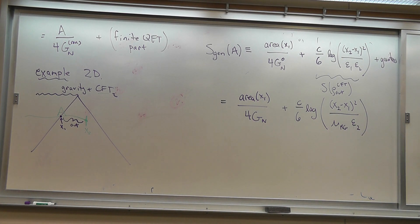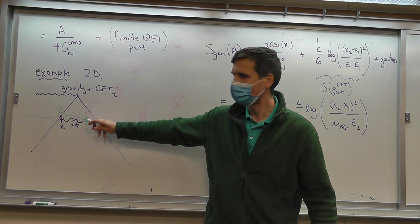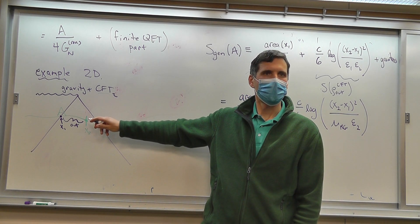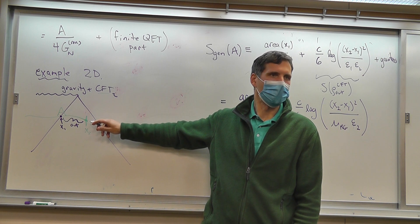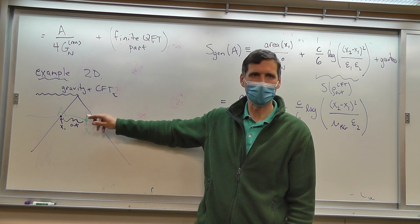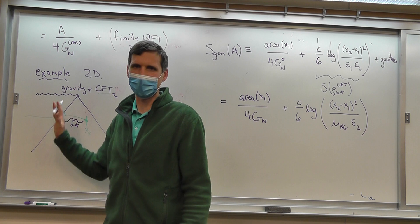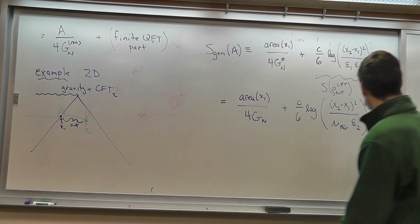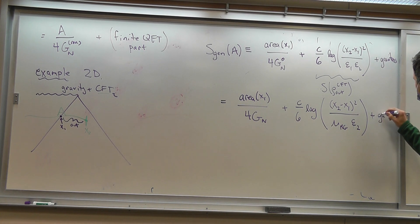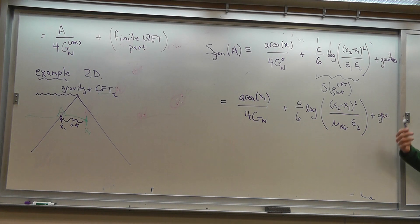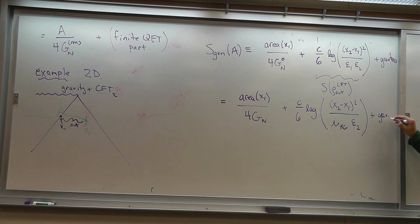There's also a UV contribution from the point x2 — that's still there, still UV divergent. We haven't included any area term at x2, so that's just still UV divergent. But that really has nothing to do with the black hole, so we don't really care. And then there's the plus gravitons term. The UV divergence of the gravitons will have a similar situation where the divergence at the horizon gets replaced by the RG scale.